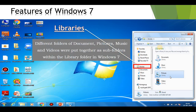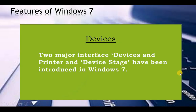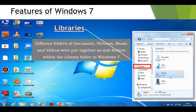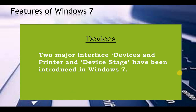The next feature is libraries. Different folders of documents, music, pictures, and videos are put together as folders within the library folder in Windows 7. The next feature of Windows 7 is devices. Two major interfaces — Devices and Printers and Device Stage — have been introduced in Windows 7.